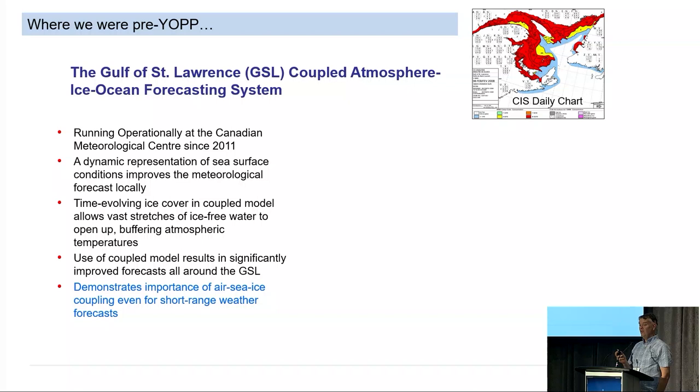At that time, at Environment and Climate Change Canada, we had one environmental prediction system - a coupled atmospheric ocean forecasting system - and it was a coupled system for the Gulf of St. Lawrence, which you can see in the map on the top right.